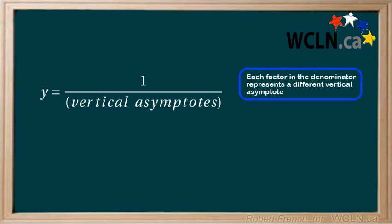Each factor in the denominator represents a different vertical asymptote. The most basic example is the following: 1 over x, which has a vertical asymptote at x equals 0.